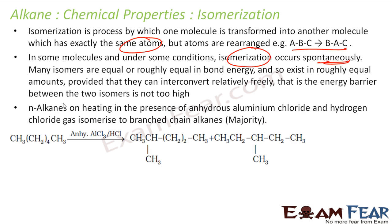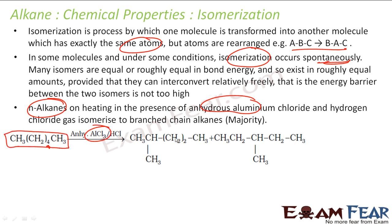Generally isomers have very little difference in energy, so in most conditions isomerization occurs spontaneously. For example, n-alkanes when heated with aluminium chloride (AlCl₃) and hydrogen chloride (HCl) give isomers. You take n-hexane, heat it with AlCl₃, and you get the branched one. This is called isomerization.